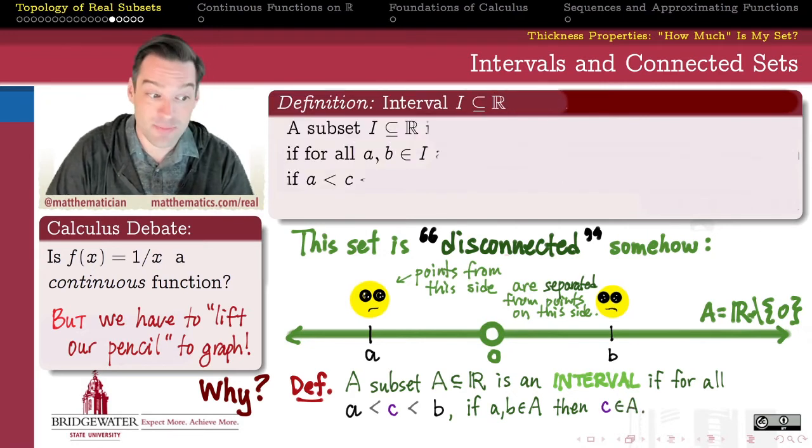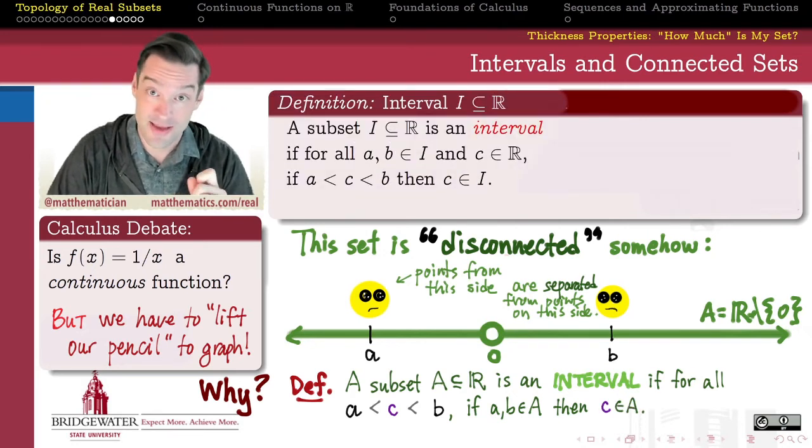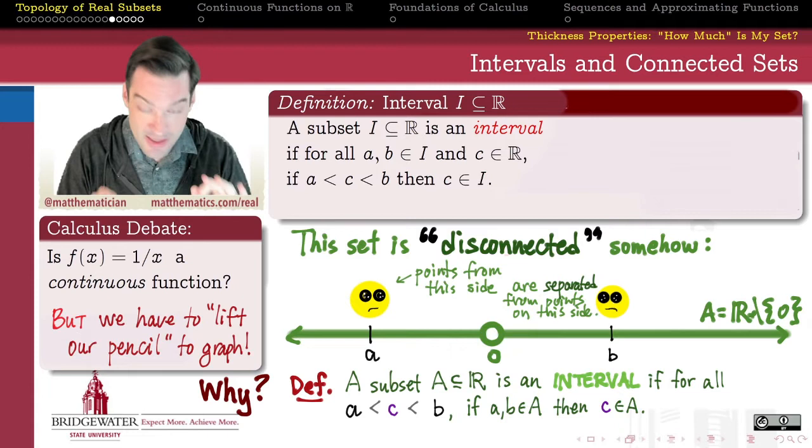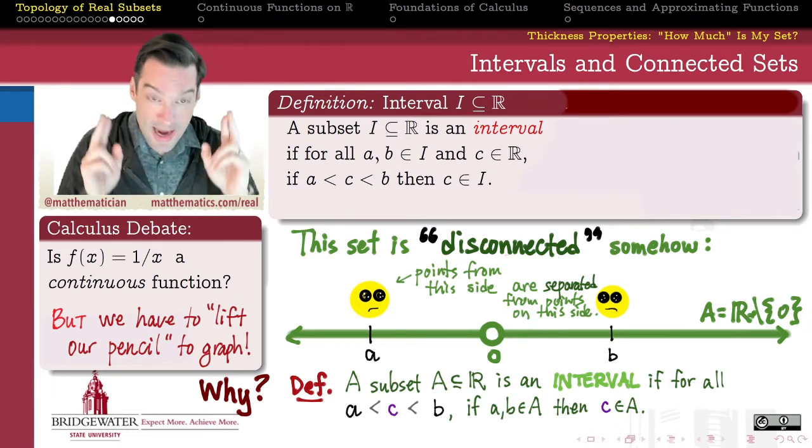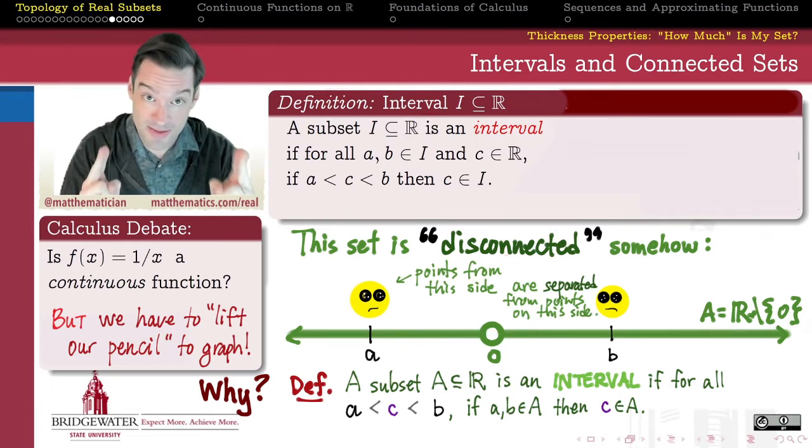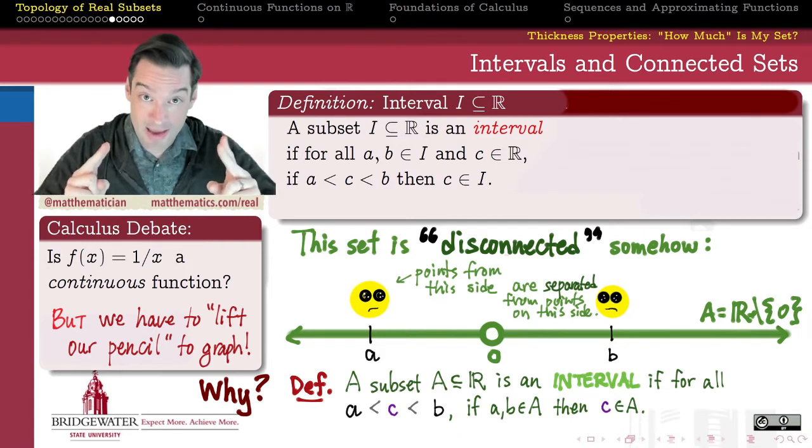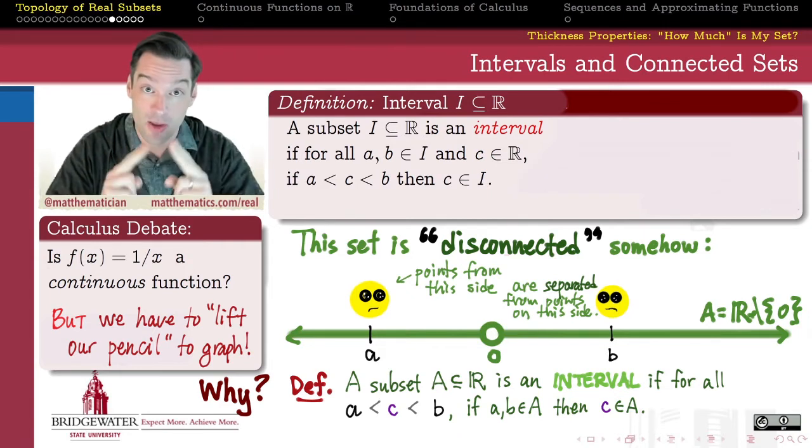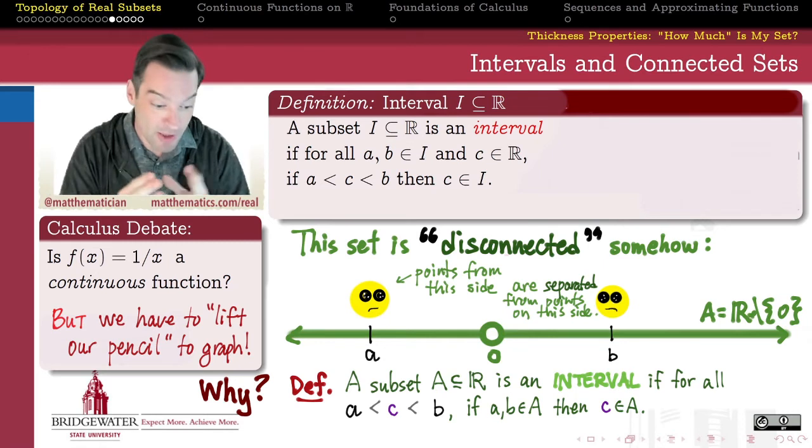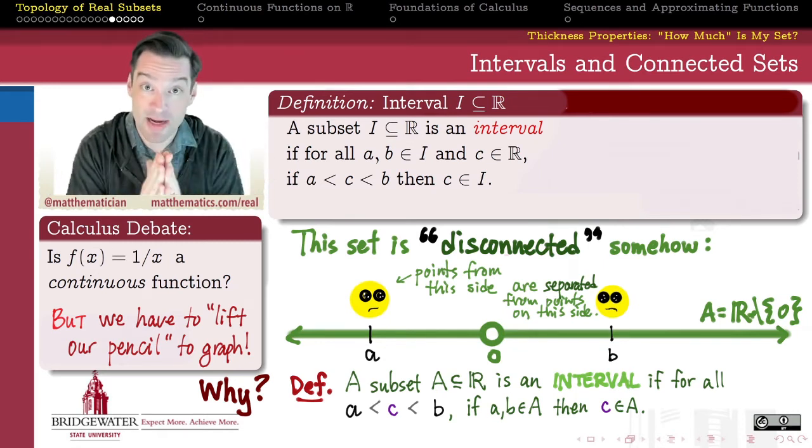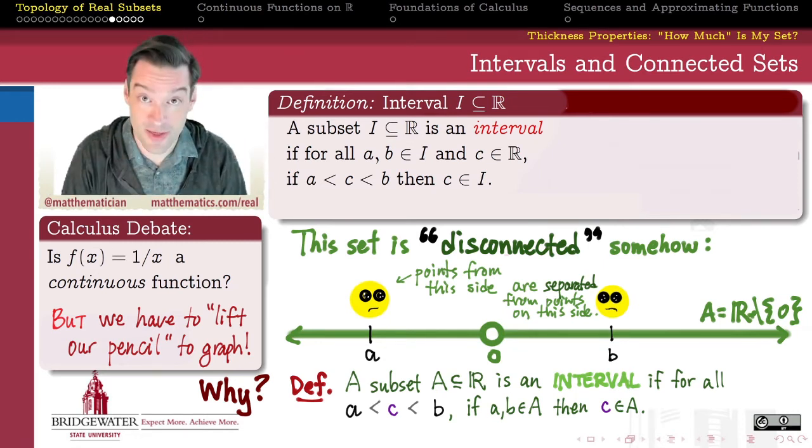then if my A and B belong to my set, then everything in between also has to belong to that set. So an interval is just a subset of the real numbers where any two different points that belong to my set imply that every real number in between those two points also belongs to my set. So an interval is just something that can't skip over any values in between any two values that it contains.